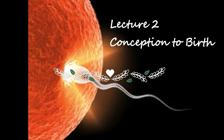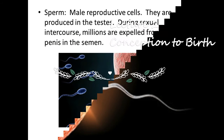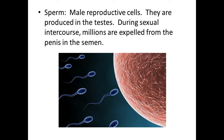During intercourse, the male puts seminal fluid into the female vagina, and that usually is about a teaspoon. And out of this mere teaspoon, there can be about 200 to 500 million sperm.